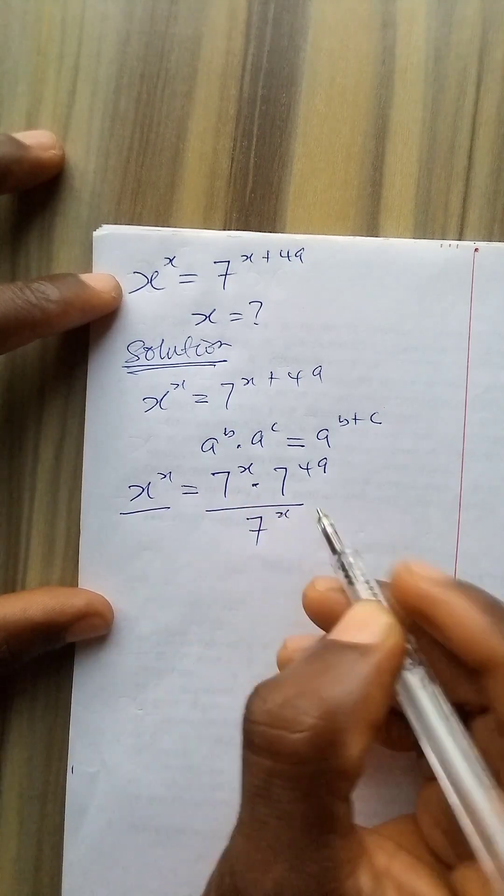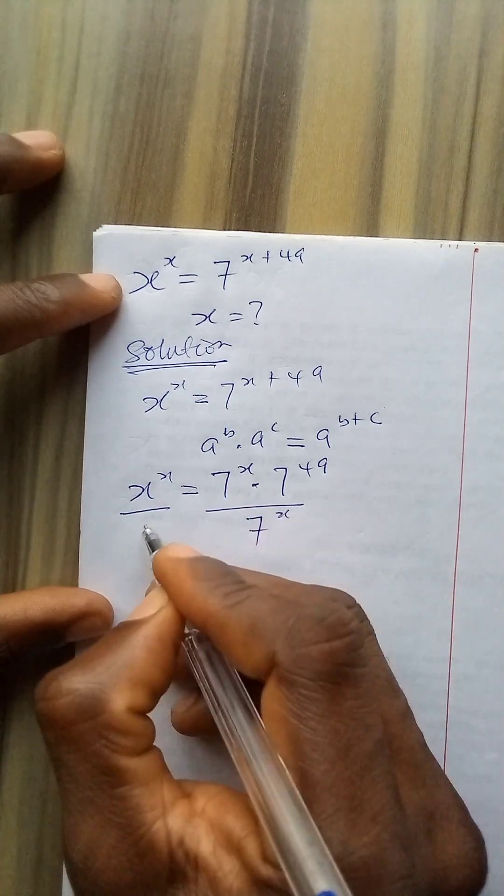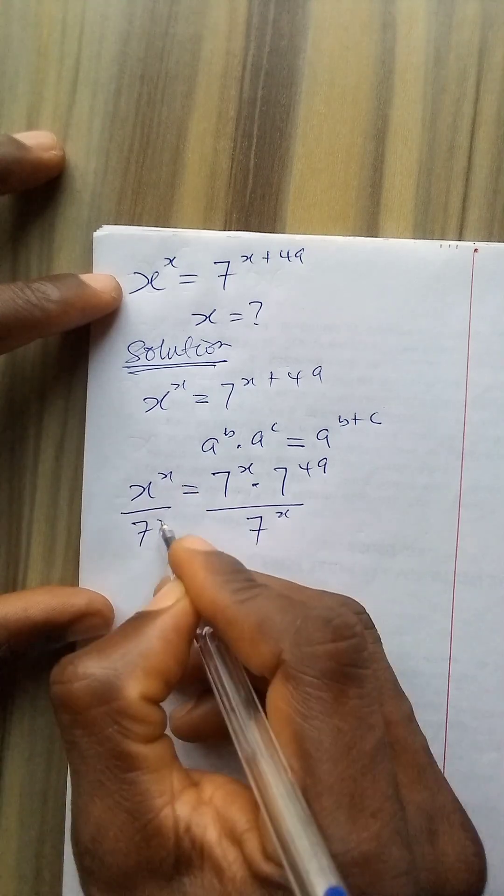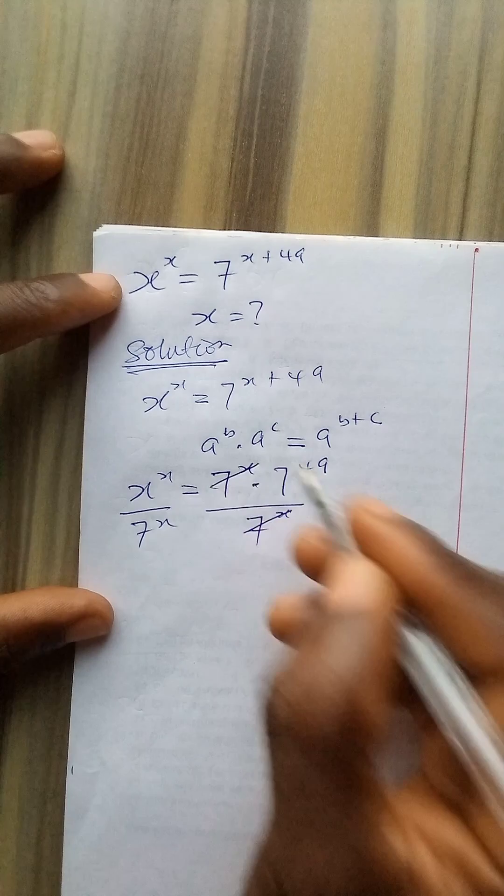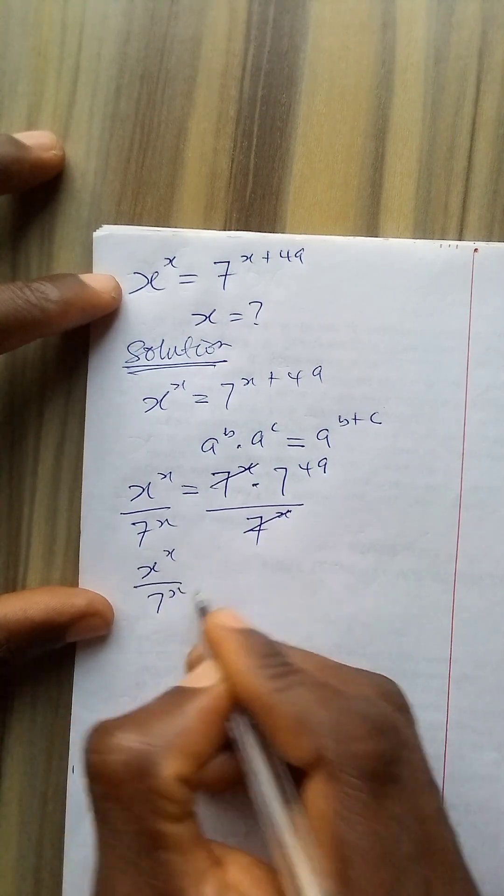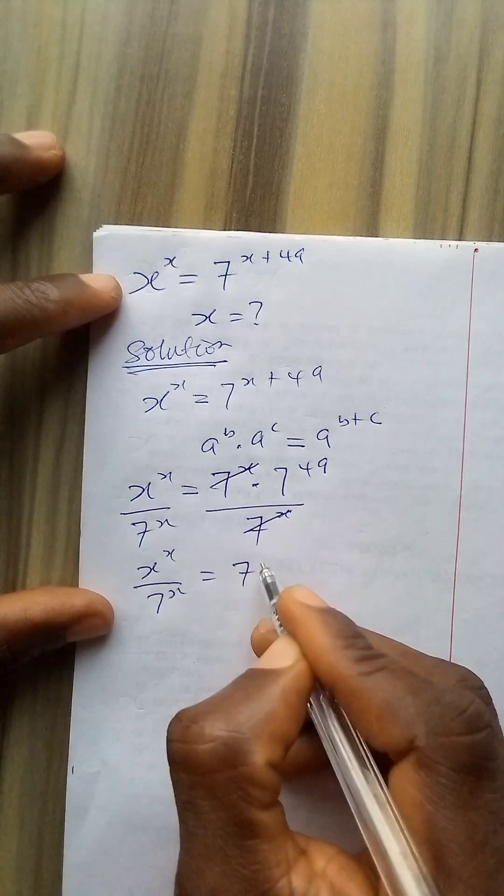So 7 to power x divided by 7 to power x equals x to power x divided by 7 to power x here. This will cancel out. So I have x to power x over 7 to power x equals 7 to power 49.